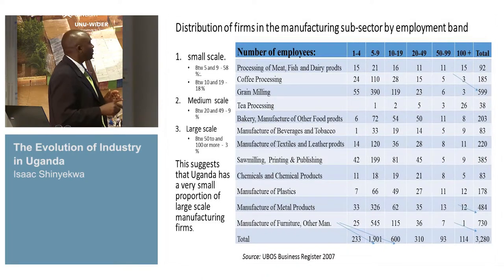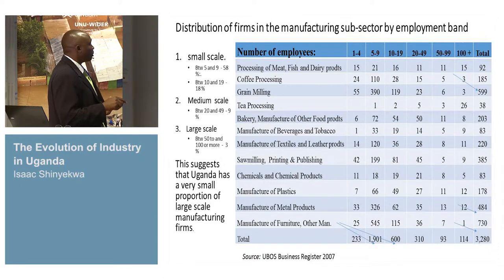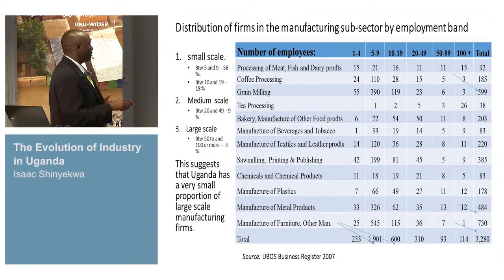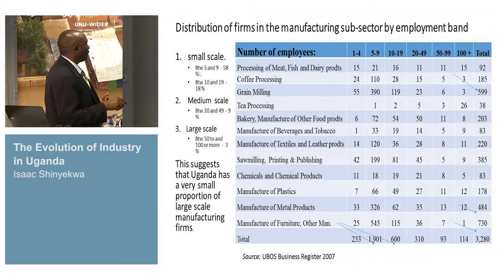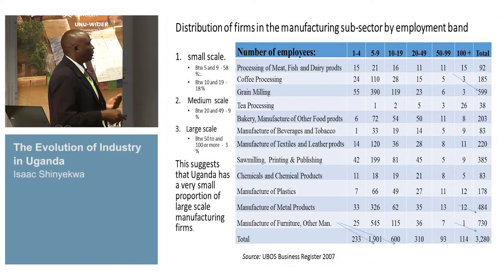This table gives us the distribution of firms in the manufacturing subsector by employment band — whether we have large-scale, small-scale, or medium enterprises. Small scale seems to be the dominant category: those that employ five to nine people account for 58%, which is quite a large number. Medium is about 9%, and large scale is only 3%. So this suggests Uganda has a very small proportion of large-scale manufacturing firms — it is predominantly small-scale.